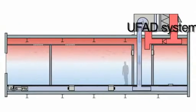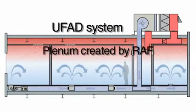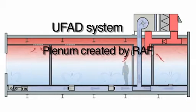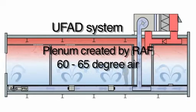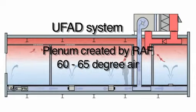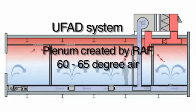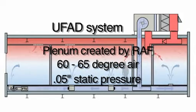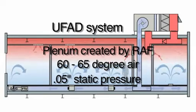Underfloor air distribution uses a space beneath the raised access floor — usually 14 to 18 inches — as a pressurized plenum, which contains 60 to 65-degree air. This plenum essentially acts as a duct throughout the entire floor plate. The plenum is pressurized to approximately 0.05 inches of static pressure and air is delivered at lower velocities through floor-mounted diffusers.